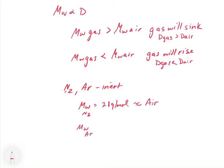Argon, on the other hand, has a molecular weight of about 39.95 g/mol, which is much greater than air. If an argon tank leaked, argon would fill the room from the floor up toward the ceiling. You might have oxygen while standing, but if you sat down, there could be no oxygen at floor level — it might be completely filled with argon. Similarly, this is something to consider with where you place carbon monoxide detectors.